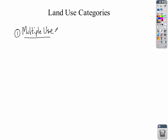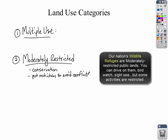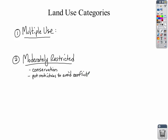The second classification is called moderately restricted. This operates under the principle of conservation — you can use it and go on it, but with restrictions to avoid the conflicts of multiple use. For example, a forest might be allowed to be logged, but only certain trees. This maintains biodiversity on that property and makes sure it isn't destroyed.